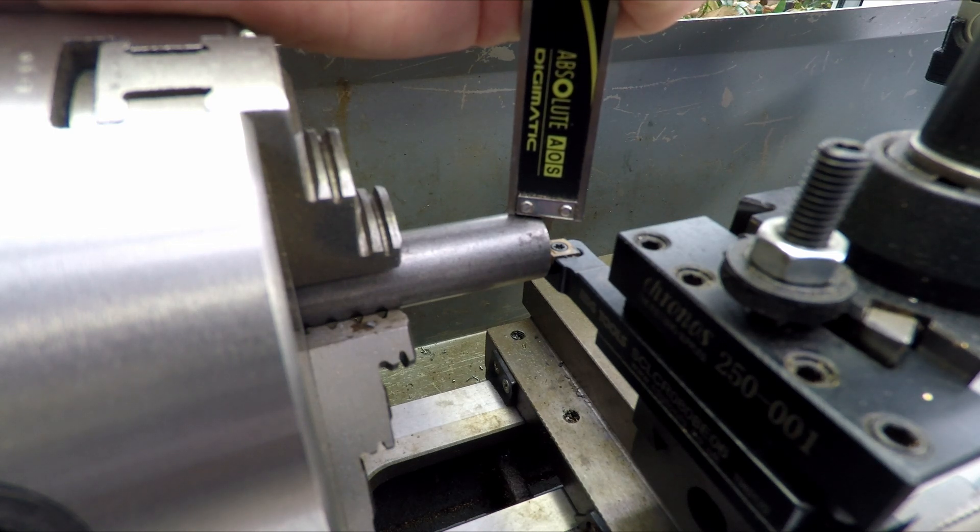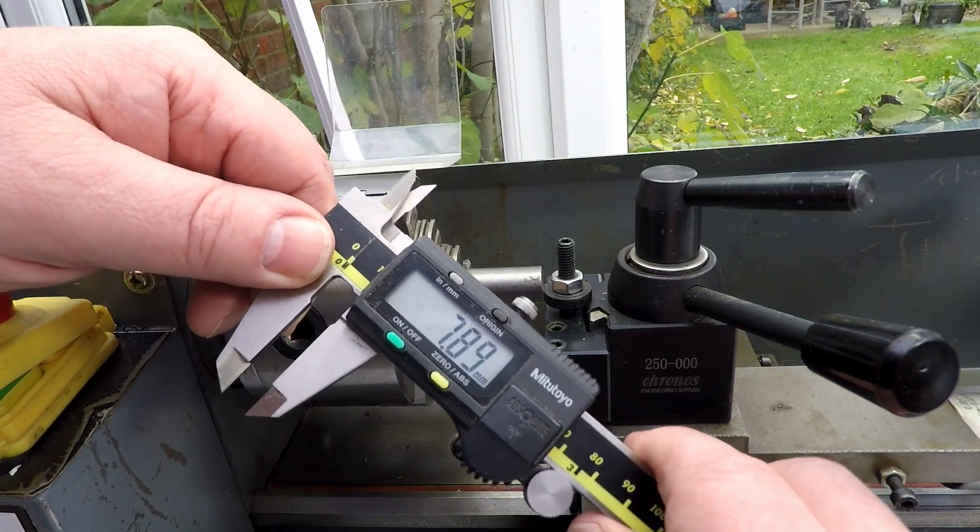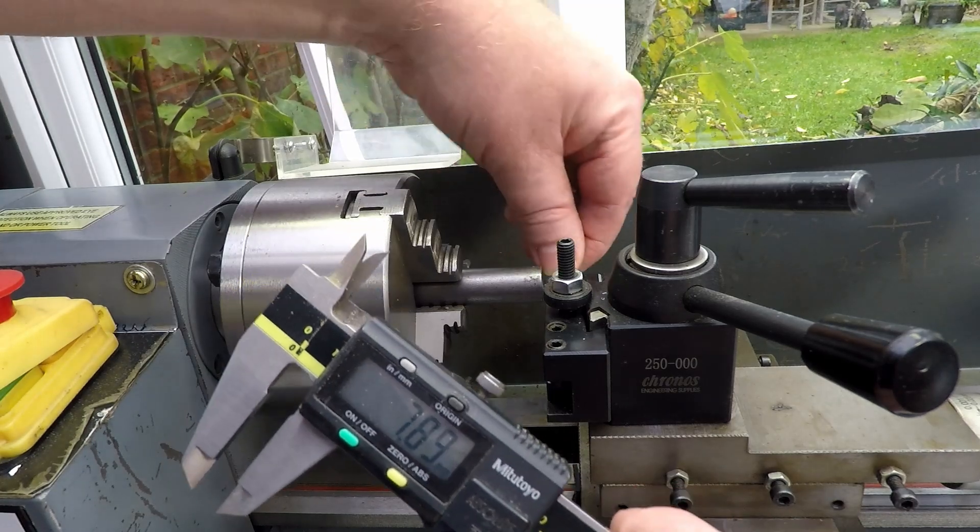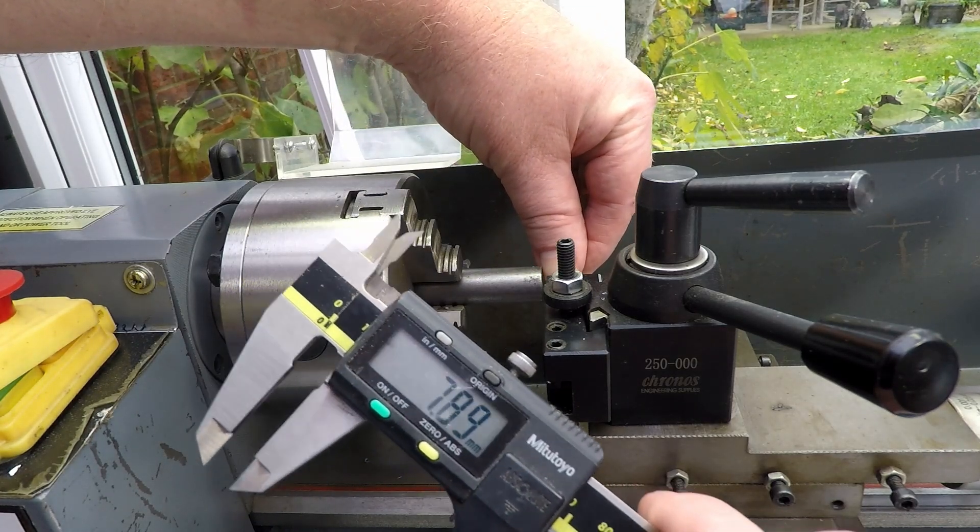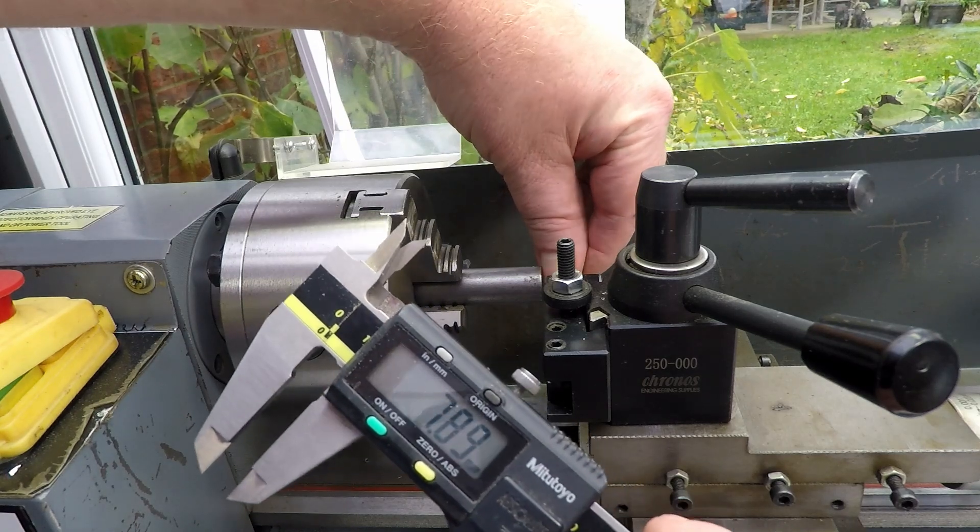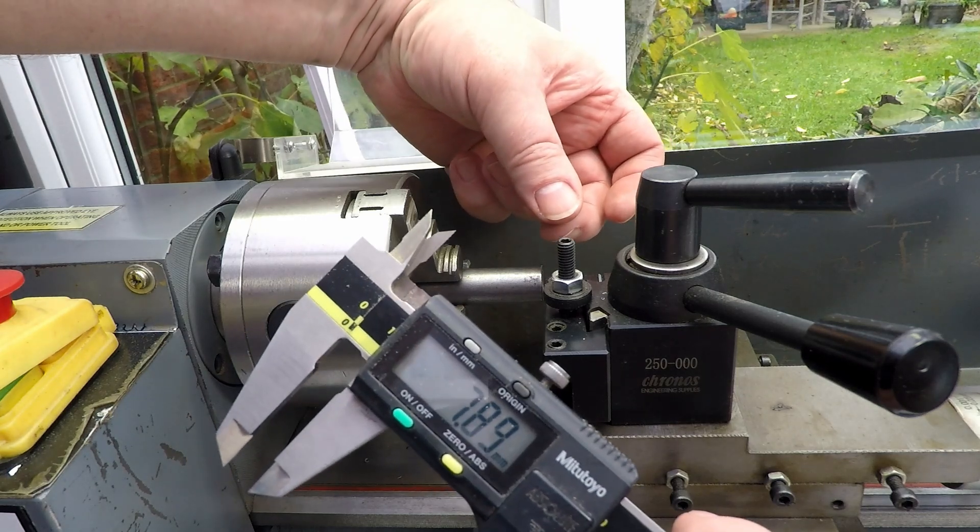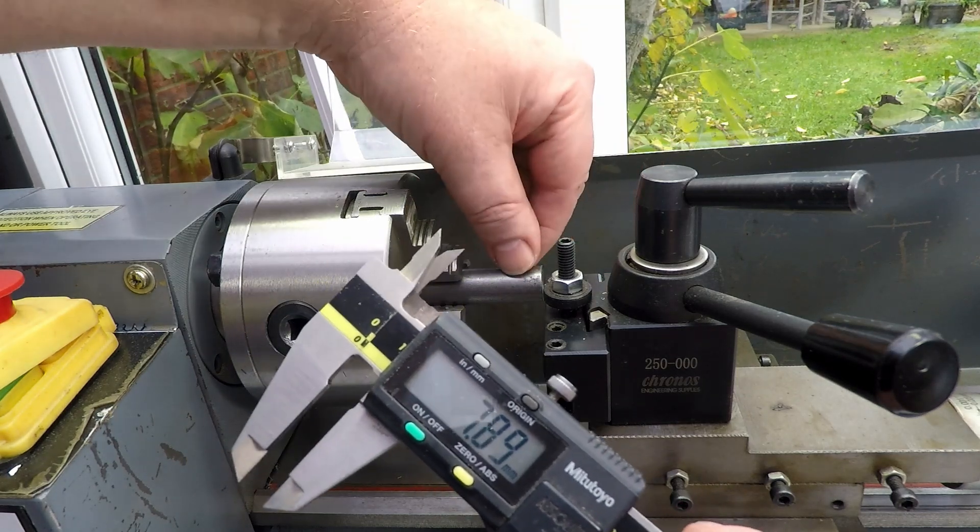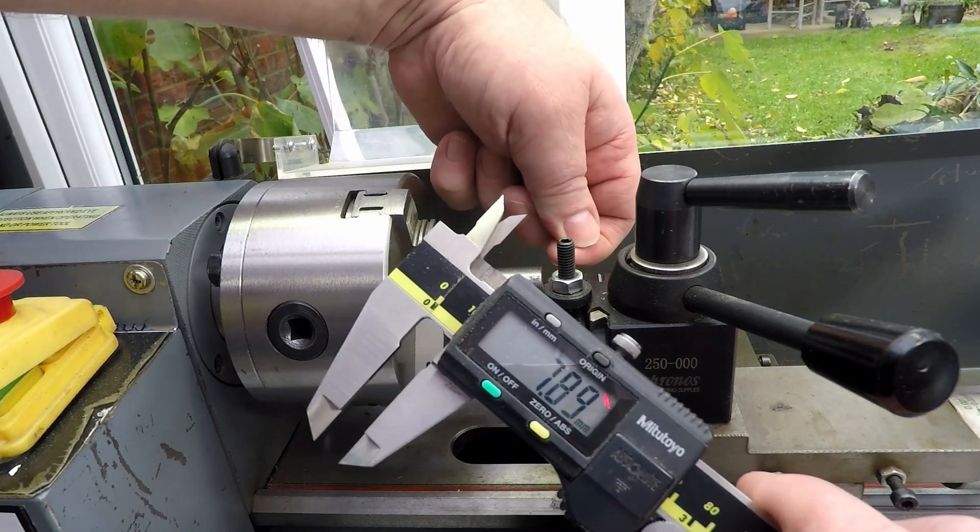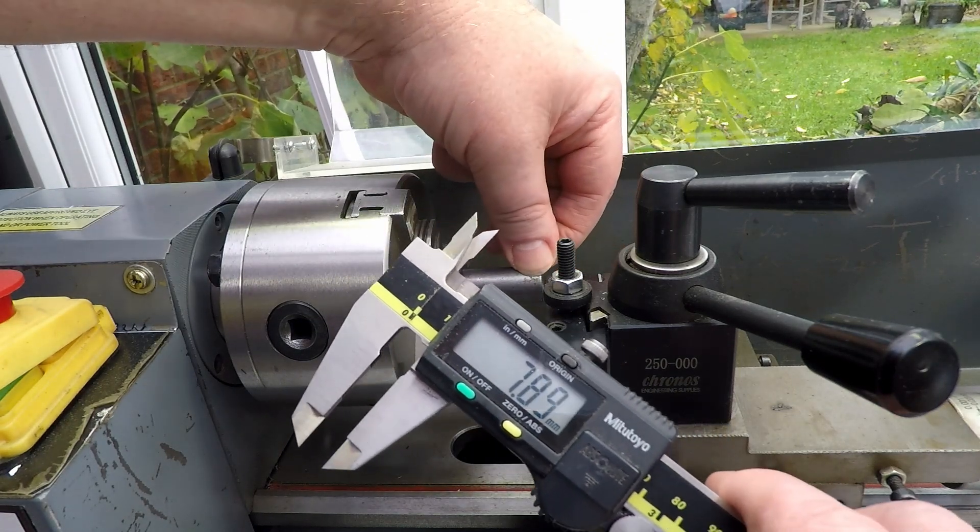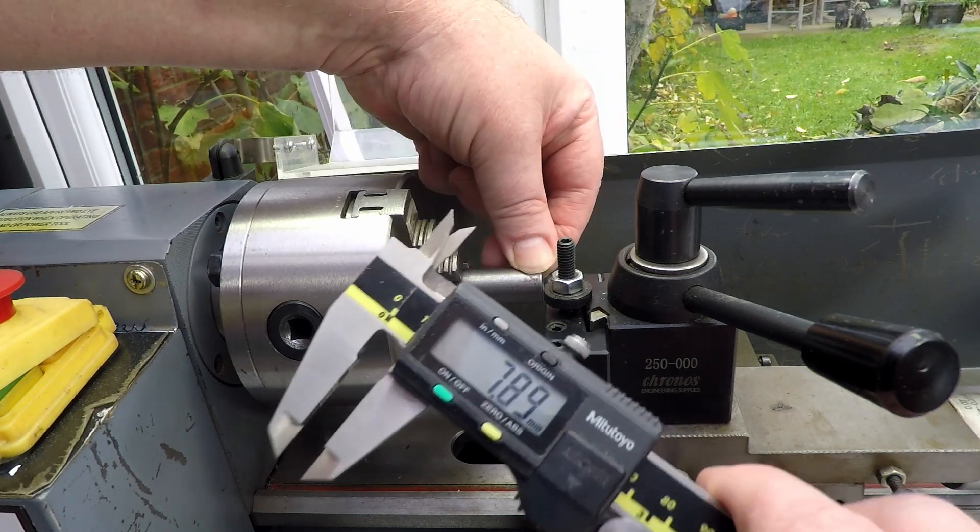Taking a reading, I got 7.89mm. So the distance from the top of the work to the top of the tool is 7.89mm, and it should be 7.98mm. This is slightly smaller—the gap at the top is slightly smaller than it needs to be—so I need to bring the tool down. I want 7.98mm or slightly more, so I'll adjust the tool a little bit.